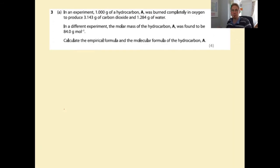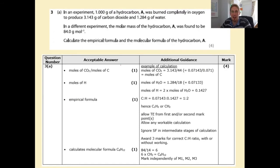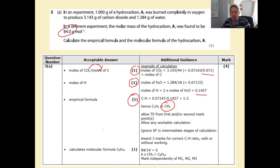In an experiment, 1g of hydrocarbon A was burned completely to produce 3.143g of CO₂ and 1.284g of water; molar mass is 84 g/mol. Calculate the empirical and molecular formulas. First mark: calculate moles of CO₂ and hence moles of carbon. Second mark: calculate moles of H from moles of water × 2. This gives a 1:2 ratio so the empirical formula is CH₂. Since the formula mass is 84 g/mol, the molecular formula must be C₆H₁₂.